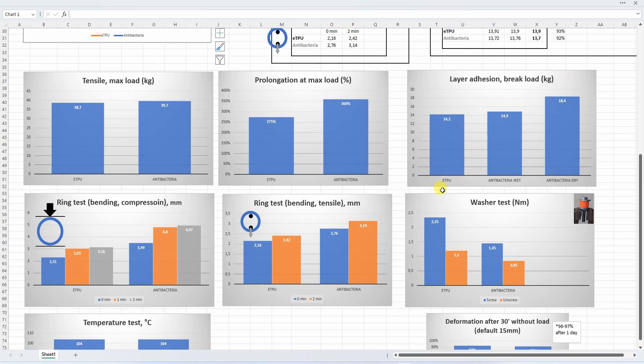The layer adhesion. The weakest was the regular TPU. Now with antibacterial I had two types of objects: one was wet directly from the box and the other was after drying. We can see that drying has a very important effect to layer adhesion.